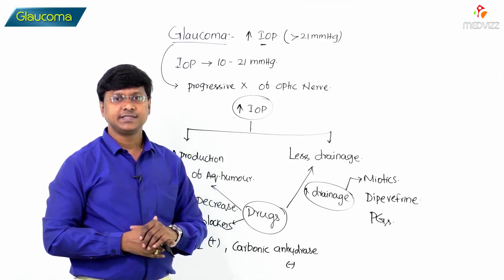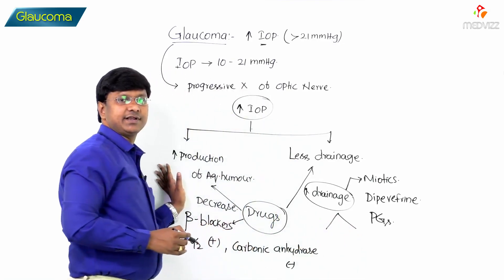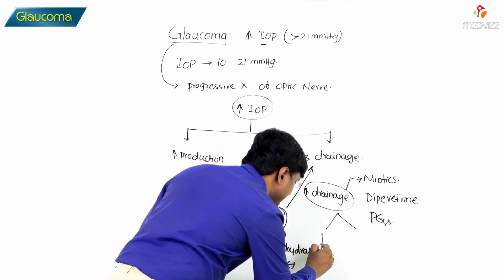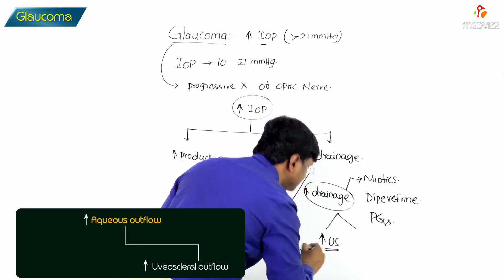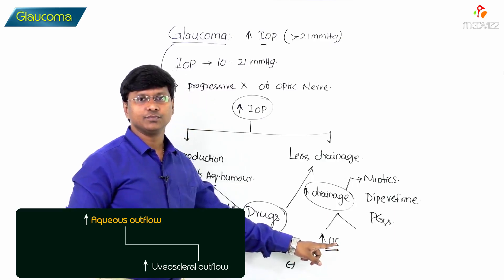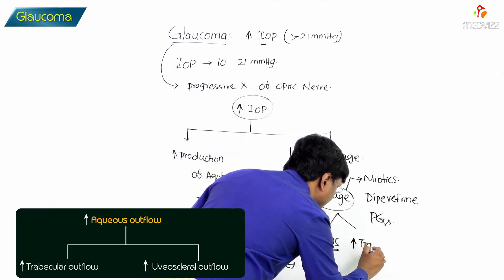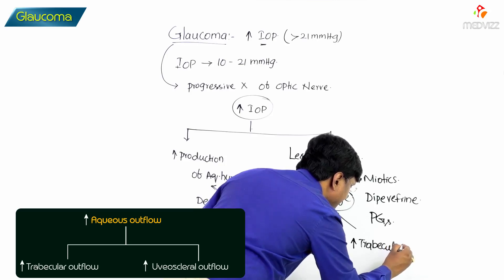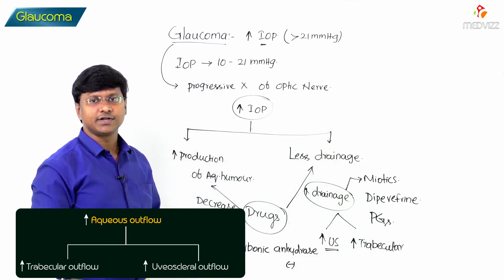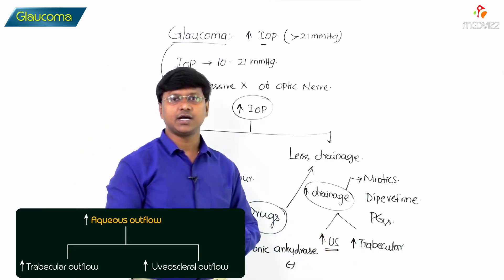This increase in the drainage of the aqueous humor either may be because of increase in the uvioscleral outflow, or the other reason is because of increase in the trabecular outflow. Let me tell you those group of drugs which will increase the uvioscleral outflow and those which will increase the trabecular outflow.